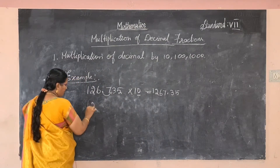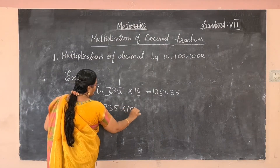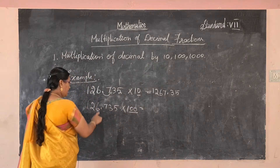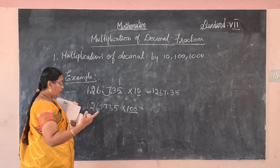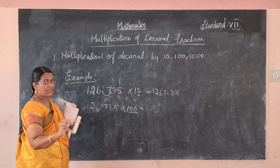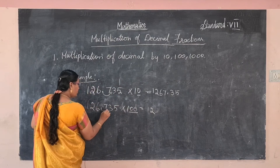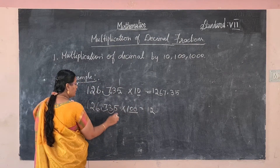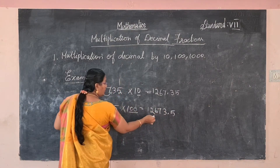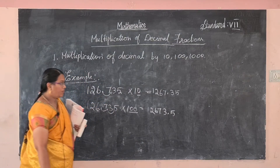For the same number multiplied by 100: how many zeros are there? Two zeros. So the decimal point shifts to the right side by two decimal places. The answer is 12673.5.